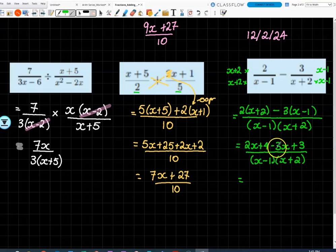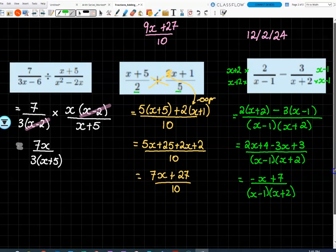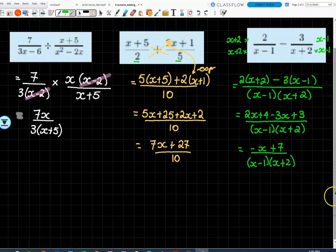2x take 3x is minus x. 4 plus 3 is 7. Well, no common factor to cancel with the denominator and that's as low as we go. So it's that. Rinse and repeat. Rinse and repeat. Sorry, boys at the back, can I lift that for you? Is that better?